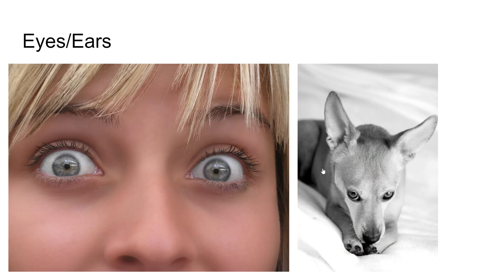Mammals also have movable eyelids, so we're able to open and close our eyes and protect them. We have an outer ear structure called a pinnae — P-I-N-N-A-E — and this is the fleshy part of the outer ear that allows us to hear. Some animals are able to direct their hearing, like a dog — when it hears something, it will perk its ears up and it's trying to hear better.